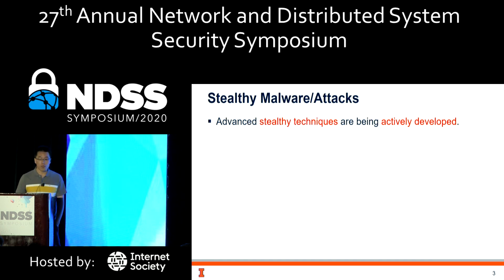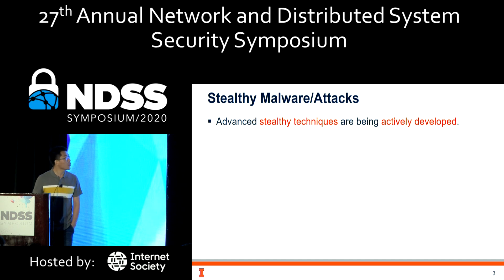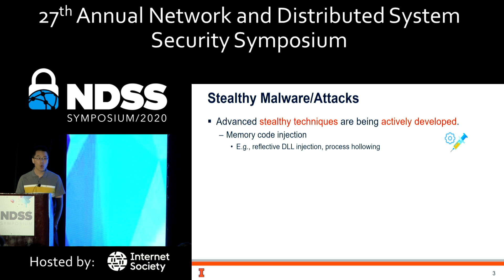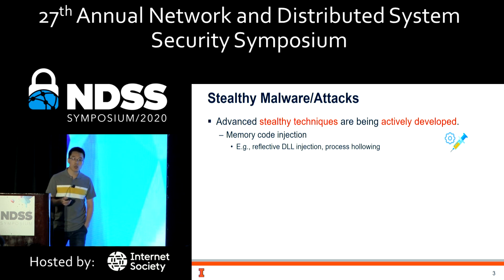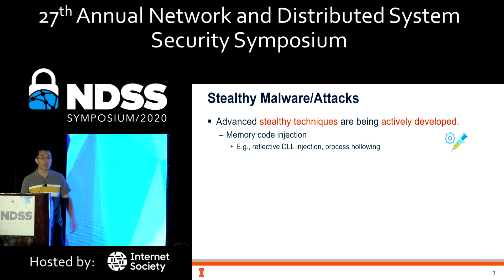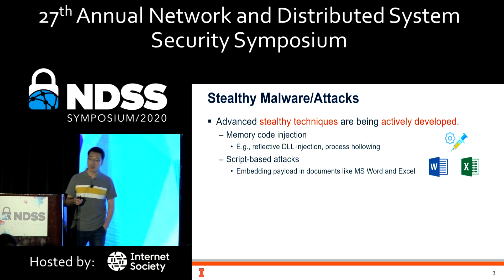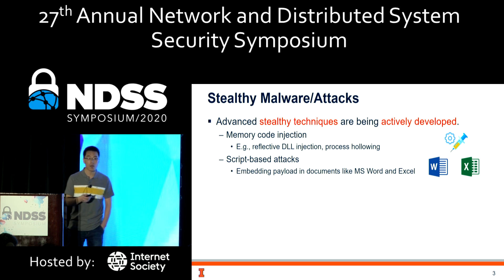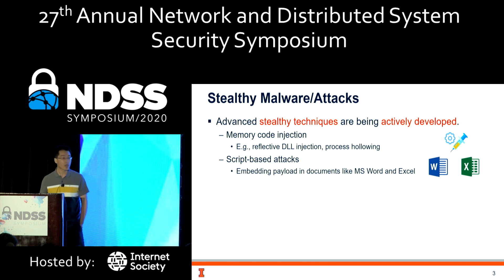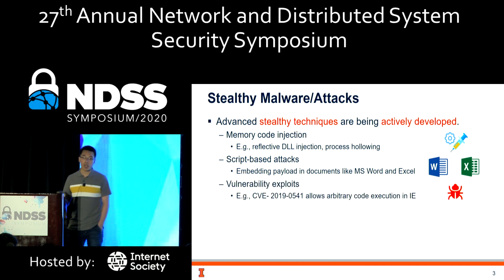There are many techniques an attacker can use for this impersonation purpose. For example, they could do memory code injection — directly injecting code into another running process using DLL injection or process hollowing. Another is script-based attack, where the payload can be embedded in documents like Microsoft Word or Excel, and when you open these documents, the payload will be executed.